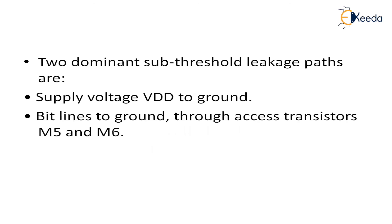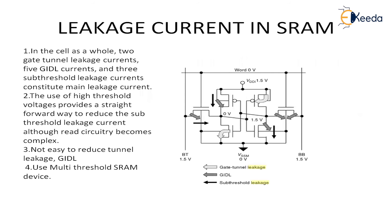There are two dominant sub-threshold leakage paths in your SRAM. First, from the supply voltage VDD there is a direct path towards ground — whatever voltage is stored or charged will be discharged towards ground even in standby mode. Second, there is another path from the bit lines to ground through the access transistors M5 and M6. Just look at the diagram: the black-color lines show the sub-threshold paths — from VDD to ground, and from the bit lines towards ground through the access transistors.